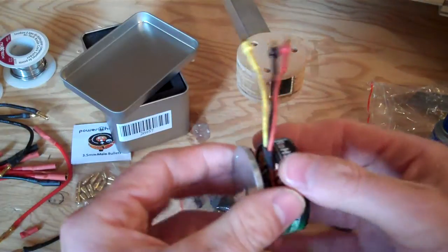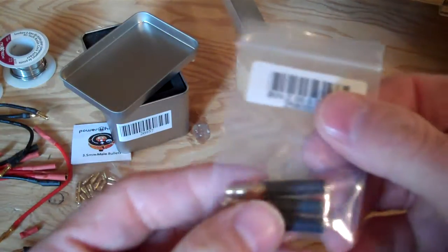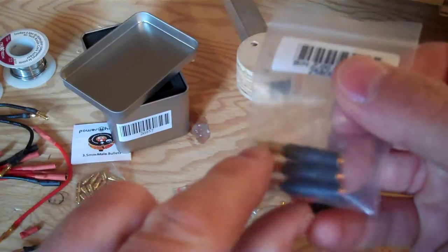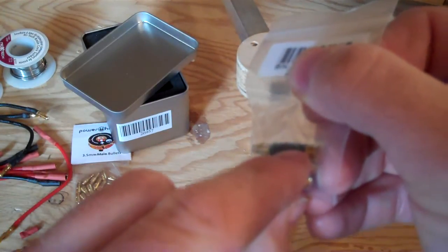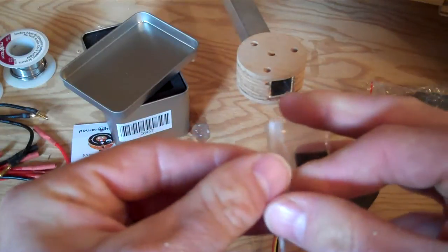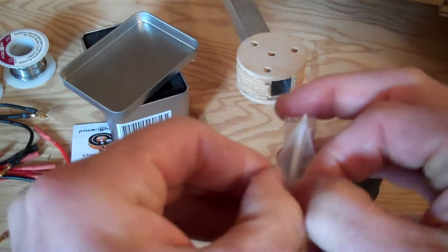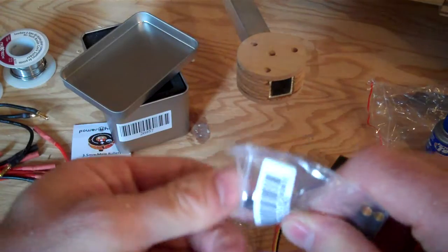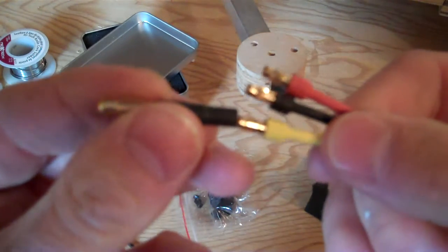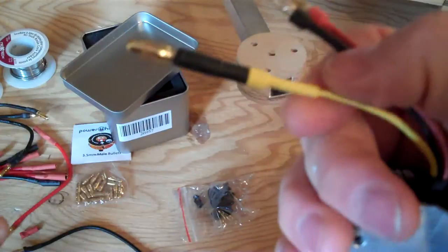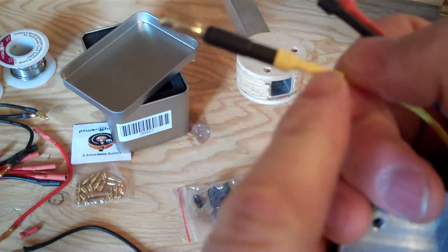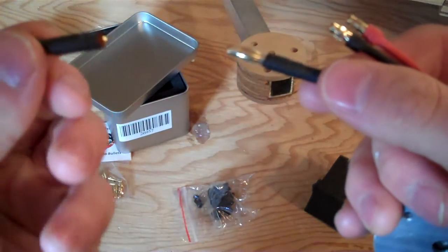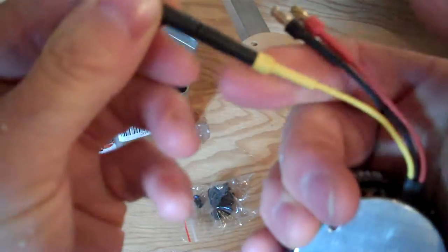Another useful tip: this packet of bullet connectors is a 4mm male and 3.5mm female soldered together with heat shrink. You can get them from HobbyKing. I would put a piece of heat shrink on that so it's guaranteed not to come off. Your 4mm connects to your 4mm, and voila - no extra soldering.